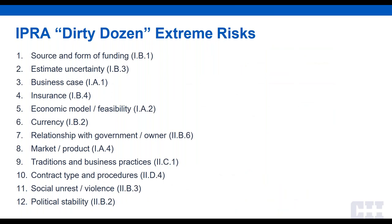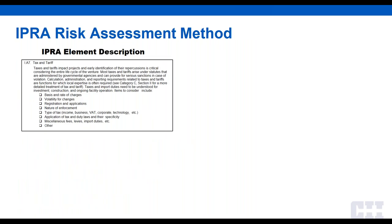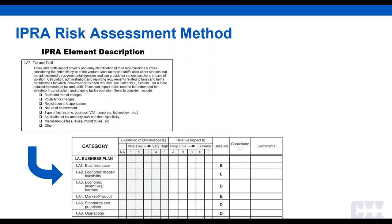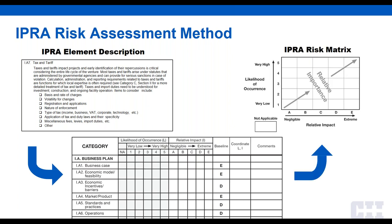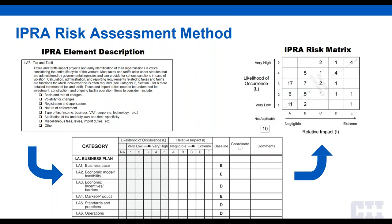There are 12 extreme risks in the IPRA. If you've ever had issues with any of these, you know how serious they are — these are the kind of things that can cripple a project. The tool includes a detailed description for each of the 82 elements. You read the description, discuss that risk in the workshop, then discuss likelihood of occurrence and relative impact, and plot the risk on the risk matrix. At the end of the assessment, you can see how the risks are distributed to get an overall view of your risk picture.